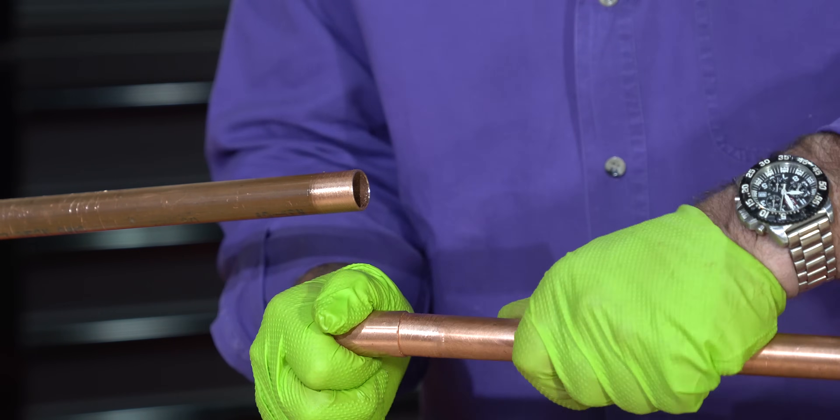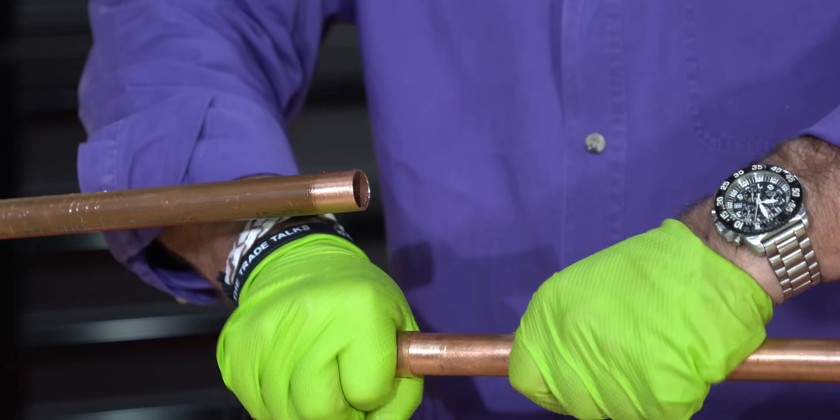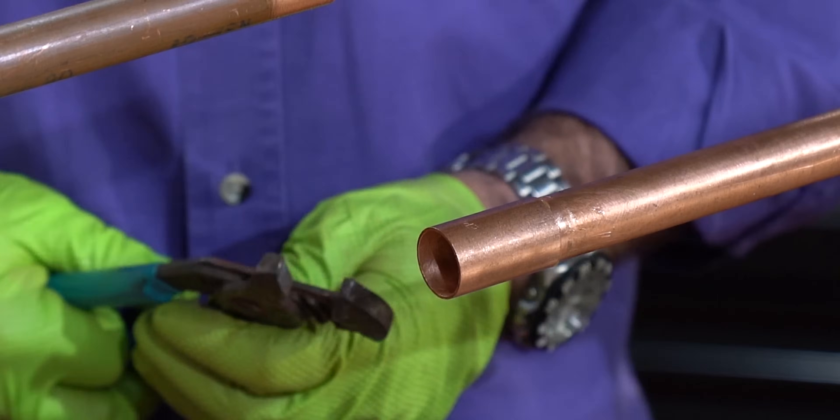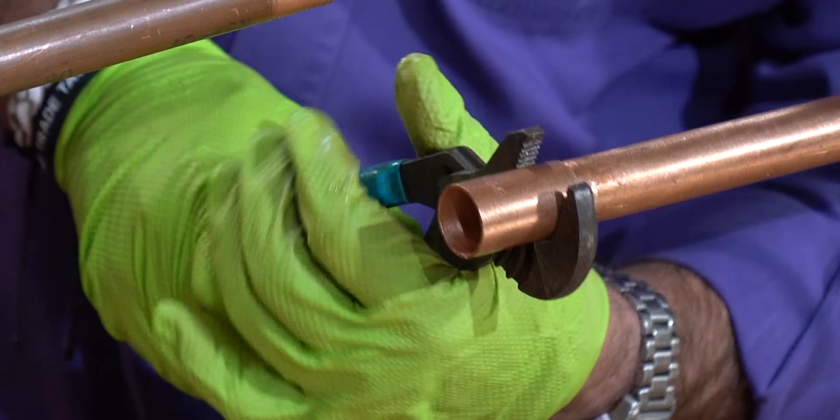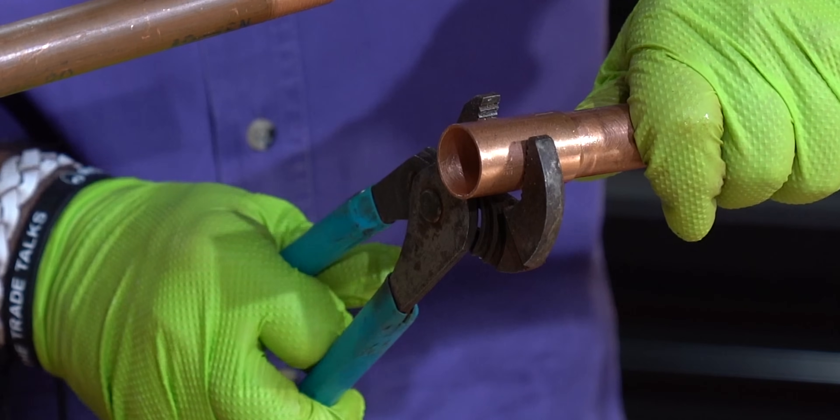As you see, it slid all the way down. So I want to pull it back to where I can see that I'm in the center. And once I get it there, I want to go ahead and take a pair of channel locks and just crimp it just a hair. And I'm just doing that enough so that it won't slide anymore.